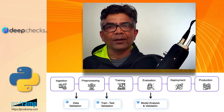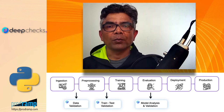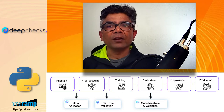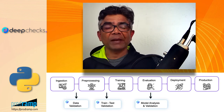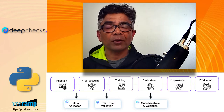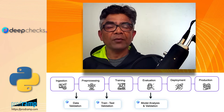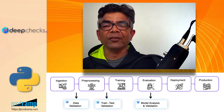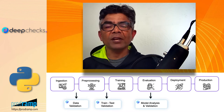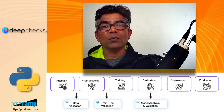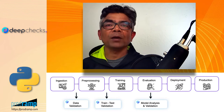Hello everyone. DeepChecks is a new open source library for performing tests related with the machine learning pipeline. Using the DeepChecks open source library you can perform tests at three different places. First, you can perform tests with your dataset before it's being pre-processed. At the second stage where your data is ready and you're splitting it into training and test, you can do data integrity tests. Finally, after your model is ready, you can perform the third level of tests related with your model combined with your training and test dataset.